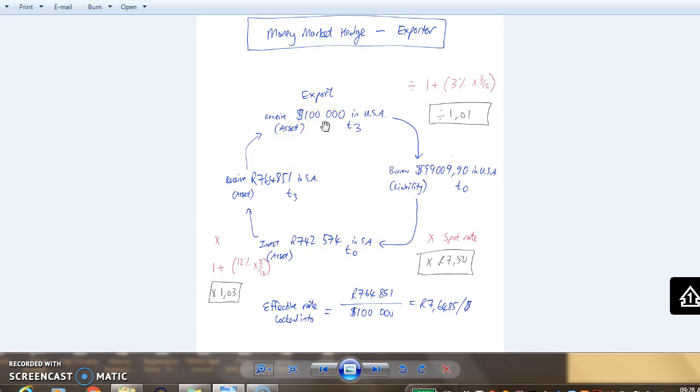At the end of the three month period, our customer will pay us $100,000 which we'll use to settle our liability of $100,000 US dollars in the US. It's just an in and out.